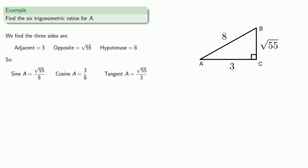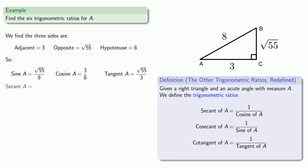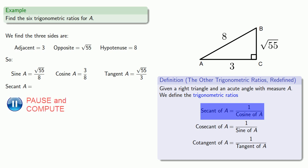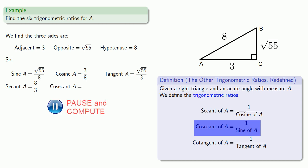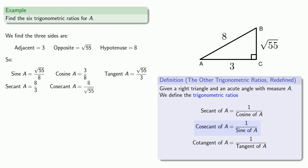Once we have the values for sine, cosine, and tangent, it's easy to find the values for secant, cosecant, and cotangent, because they are just the reciprocals. So we pull in those definitions: secant is the reciprocal of cosine, cosecant is the reciprocal of sine, and cotangent is the reciprocal of tangent.